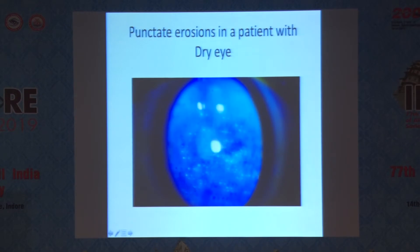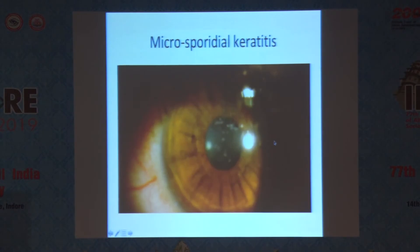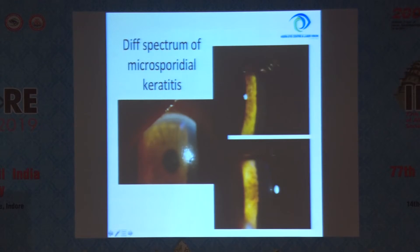This is a case of dry eye with diffuse punctate keratitis. And sometimes you have microsporidial keratitis which can be confused with punctate epitheliopathy — there are superficial elevated lesions on the cornea. Microsporidial keratitis can be focal or diffuse, and diagnosis is made by corneal scraping.